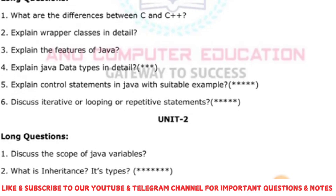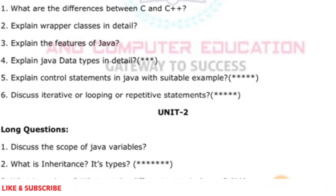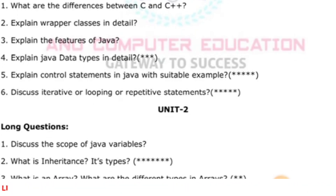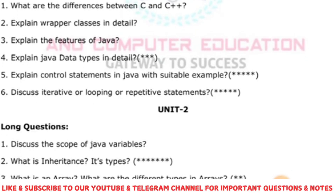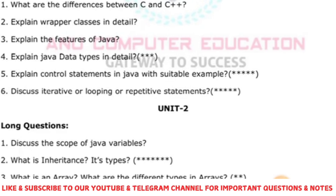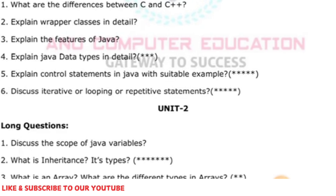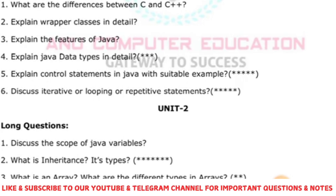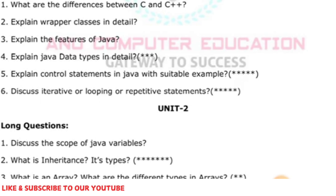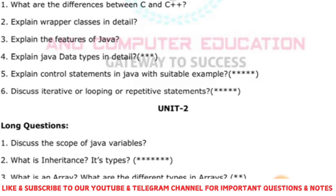When it comes to Unit 2, discuss the scope of variables — where you can access a variable within the class or outside the class — explained with access specifiers like public, static, void, and private. Also cover what is inheritance and its types: acquiring features from one class to another is inheritance. Types include single inheritance and multiple inheritance, with diagrams. Write at least one program on single or multiple inheritance for 20 marks.